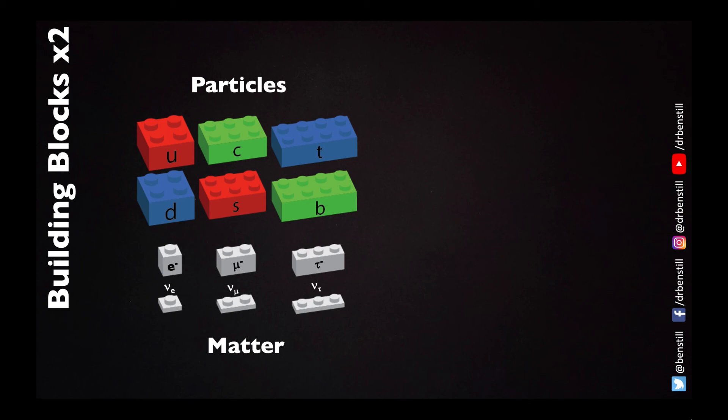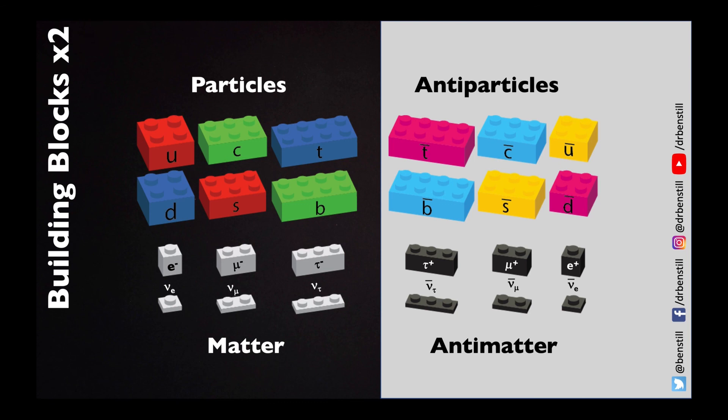I mentioned that these were the twelve building blocks of nature, but in fact we know that there exist more building blocks than just these twelve. There exists a mirror version of all of these particles. Every single particle has an antiparticle version of itself. Each one of these antiparticles has the same mass as the original particle, but the way in which it interacts with all the forces is opposite.